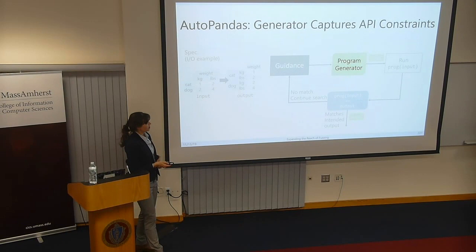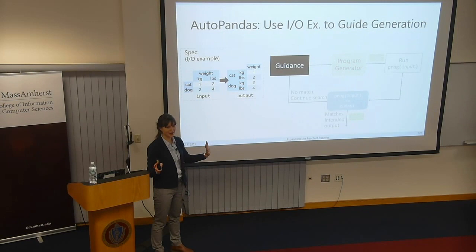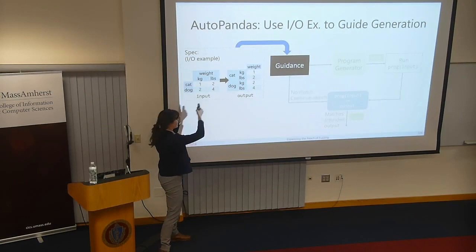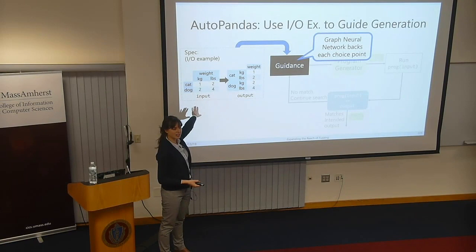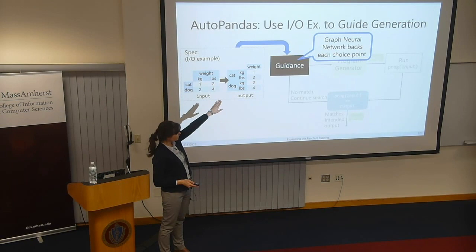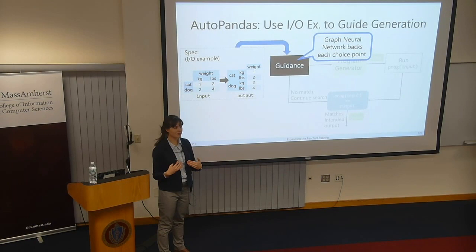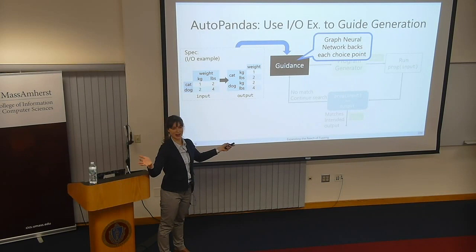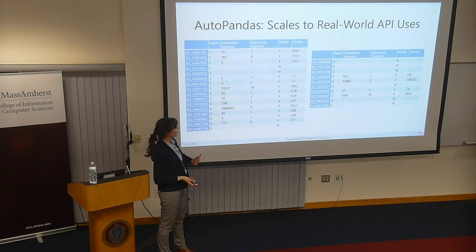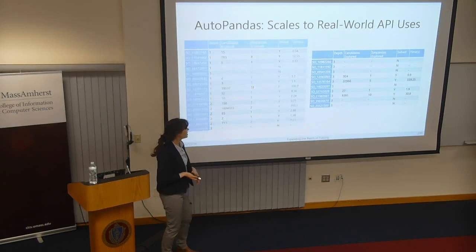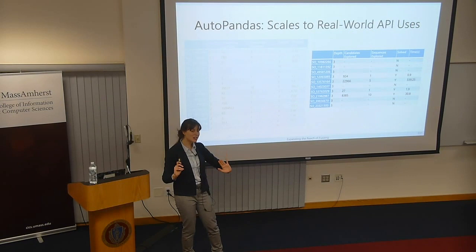Obviously this won't work if you're just randomly generating programs — it would take way too long. But we can leverage the precise specification of what we want and condition the guidance directly based on input-output examples, instead of using execution feedback. We use a graph neural network trained on input-output examples ahead of time, which backs into each choice point strategically. The preliminary results actually scale to real-world uses of the API, including Stack Overflow questions that require chaining up to three API functions — which is quite cool given an API with 300 functions and thousands of argument combinations.